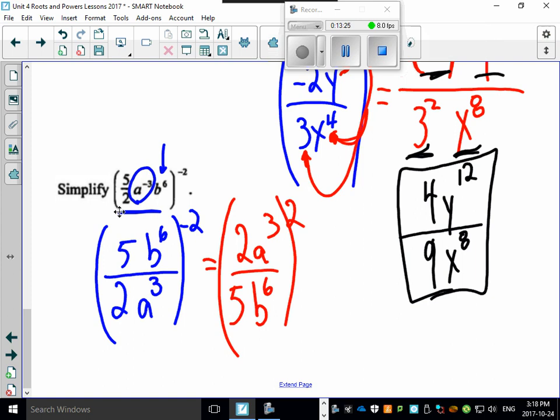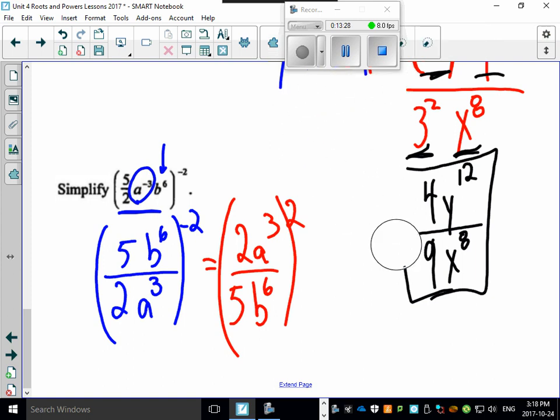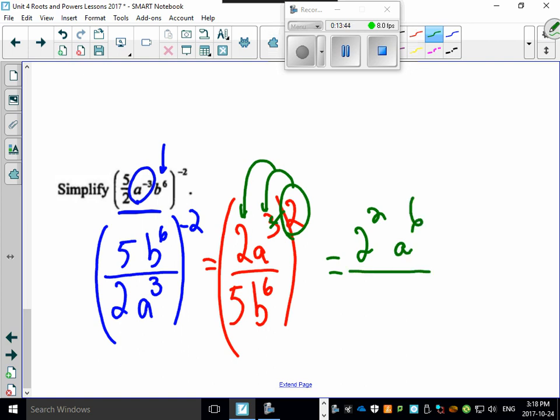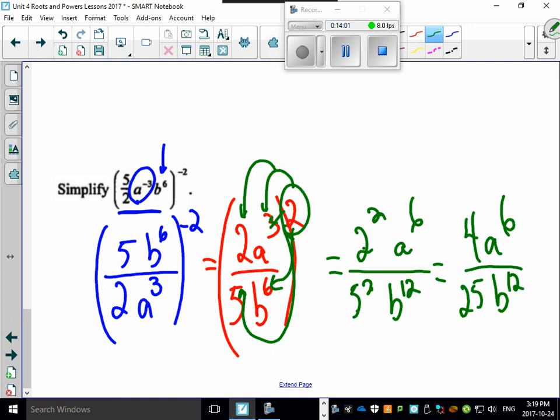So here we go: 2A cubed over 5B to the 6th, and we're going to square this. Talk about your long podcasts. Yes, you'll probably have to pause this, go to Tim Hortons, grab a coffee, and watch part 2 of this. Distribute this goes to there, distribute that goes to there. So we've got 2 squared and A to the 6th. On the bottom we have 5 squared and B to the 12th. Clean it up again. 2 squared is 4, A to the 6th. 5 squared is 25. And I know my students who are right behind me are going to burst into thunderous applause. And it's done!